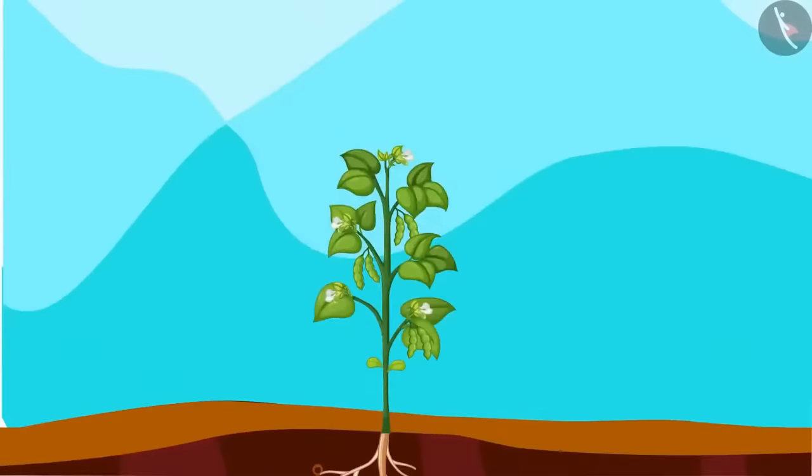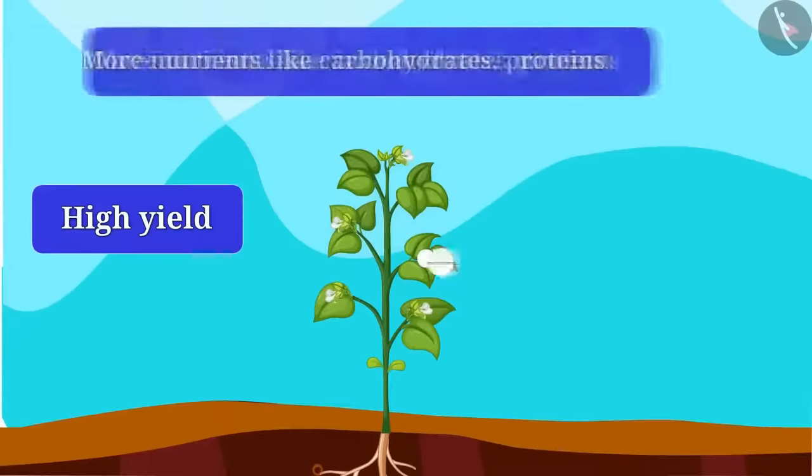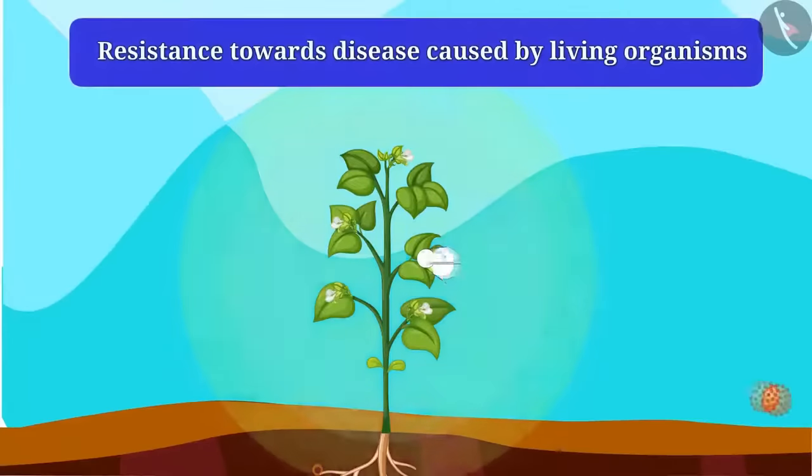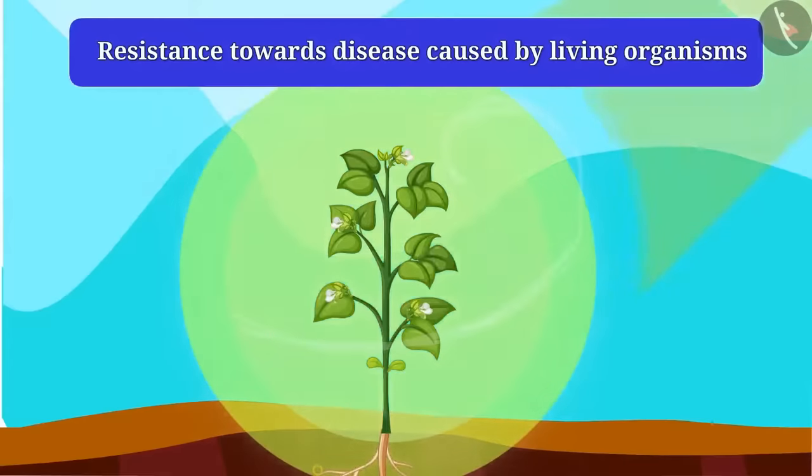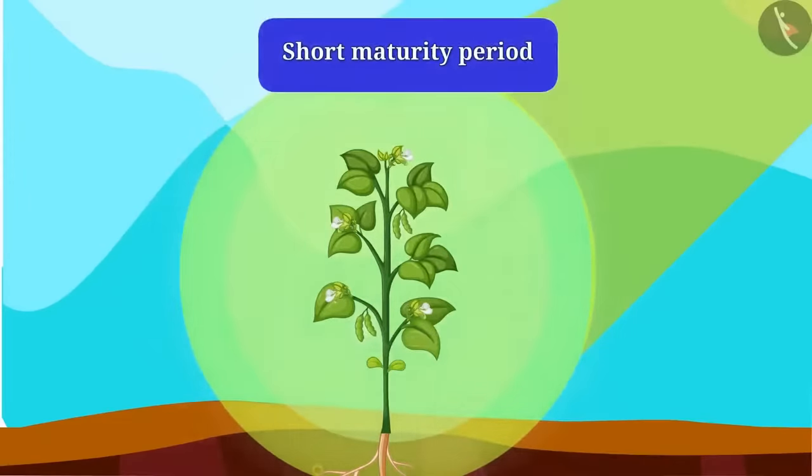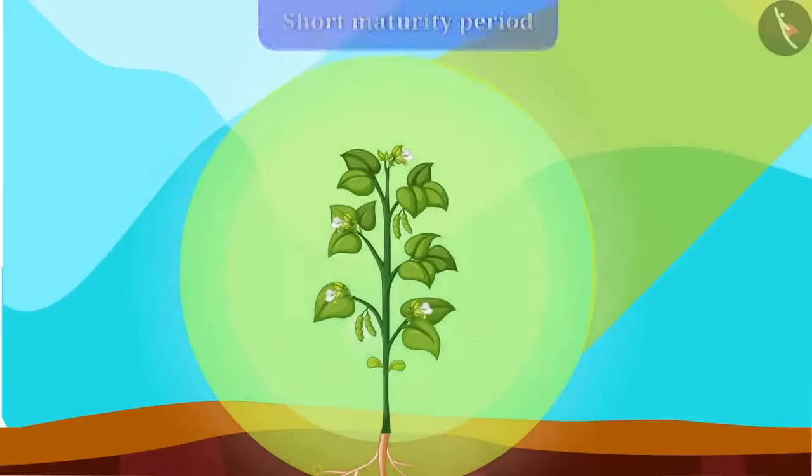Properties such as high yield, having more nutrients like carbohydrates and proteins, resistance towards disease caused by living organisms, resistance towards disease caused by non-living organisms like heat, cold, drought and short maturity period. All these qualities should be in a good seed.